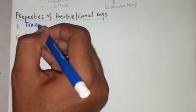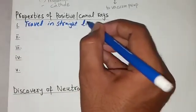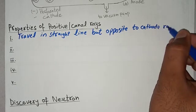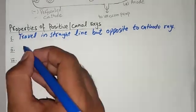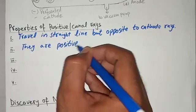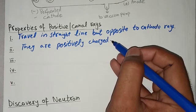Now we will learn the properties of positive or canal rays. Like cathode rays, canal rays also travel in a straight line, but the difference is that they travel in the opposite direction to cathode rays. Their second property is that they are positively charged — as cathode rays are negatively charged, these rays are positively charged because they deflect towards the negative side.